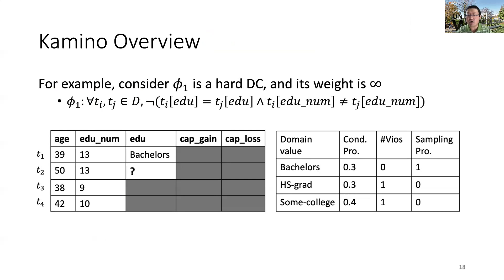Here is an example. Suppose we have one DC — education determines education number — with infinite weight. At the beginning, we sample age purely based on its distribution and sample education number conditioning on age. Then we move on to the third column, education. T1's education is generated similarly, and now we want to sample T2's education. Suppose the domain for education has only three values, and their conditional probability based on T2's age and education number is shown on the right. If we assign any value other than bachelor's, T2 will violate with T1. Because of infinite weight, the non-zero violations diminish the sampling probability to zero. The last column on the right shows the adjusted sampling probability by taking violations into account — it's highly likely to assign bachelor's to T2, which does not incur violations.